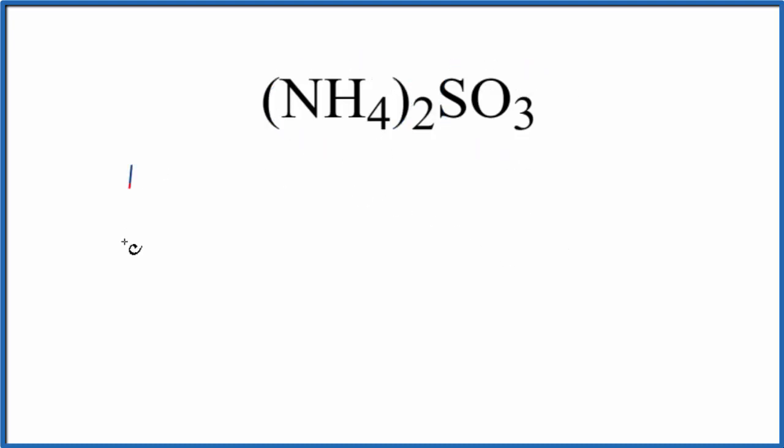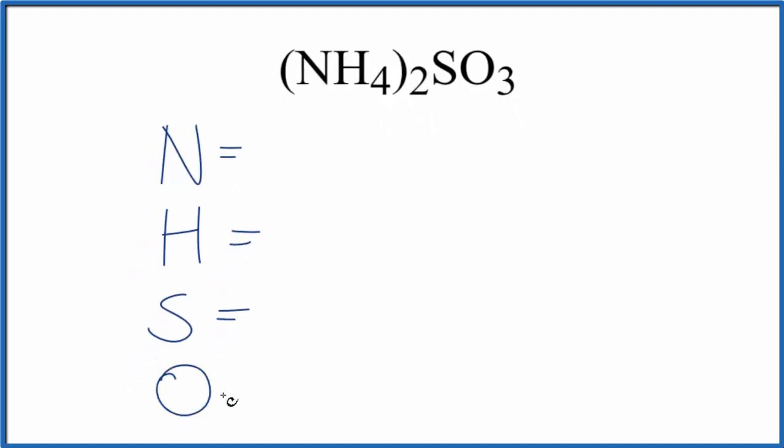So to do that, we have the elements. We have nitrogen, hydrogen, sulfur, and then oxygen. For the nitrogen, there's nothing written after the N. We assume there's a 1 there. So we have 1 nitrogen, but this 2 applies to everything in parentheses. So 2 times 1 means we have 2 nitrogen atoms. 2 times 4 means 8 hydrogen atoms.